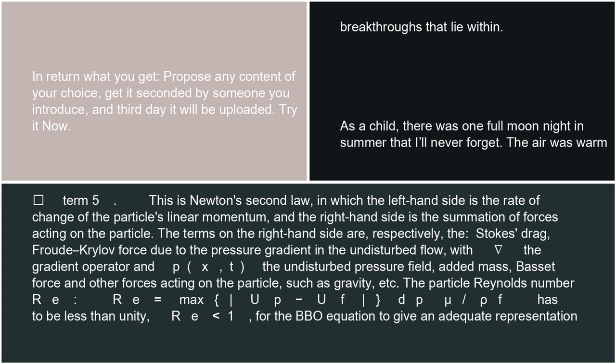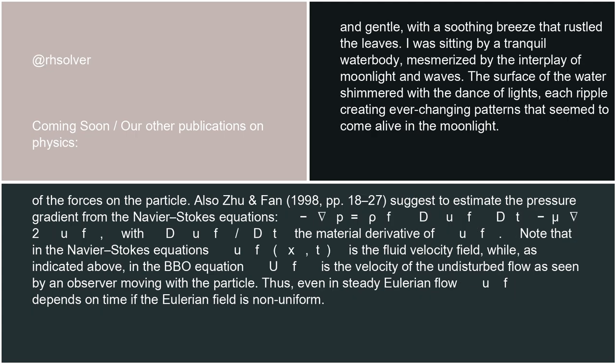The particle Reynolds number R_e equals max(|u_p minus u_f| d_p mu / rho_f) has to be less than unity, R_e less than 1, for the BBO equation to give an adequate representation of the forces on the particle.